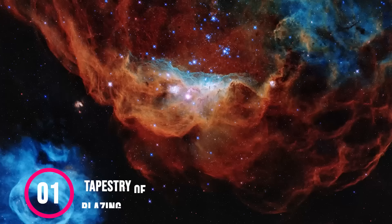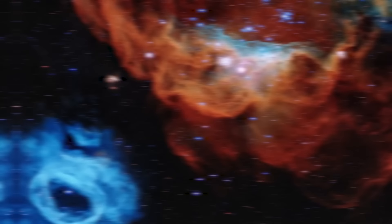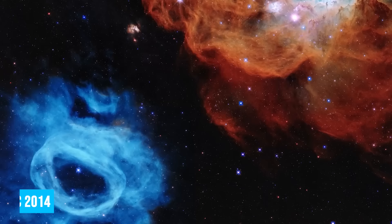Number 1. Tapestry of Blazing Starbirth. This image is one of the most photogenic examples of the many turbulent stellar nurseries. The portrait features the giant nebula NGC-2014 and its neighbor, NGC-2020,